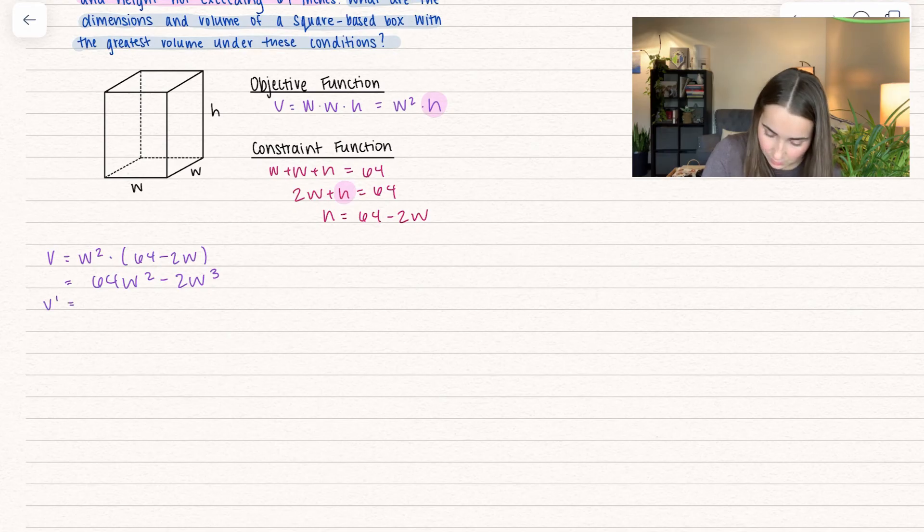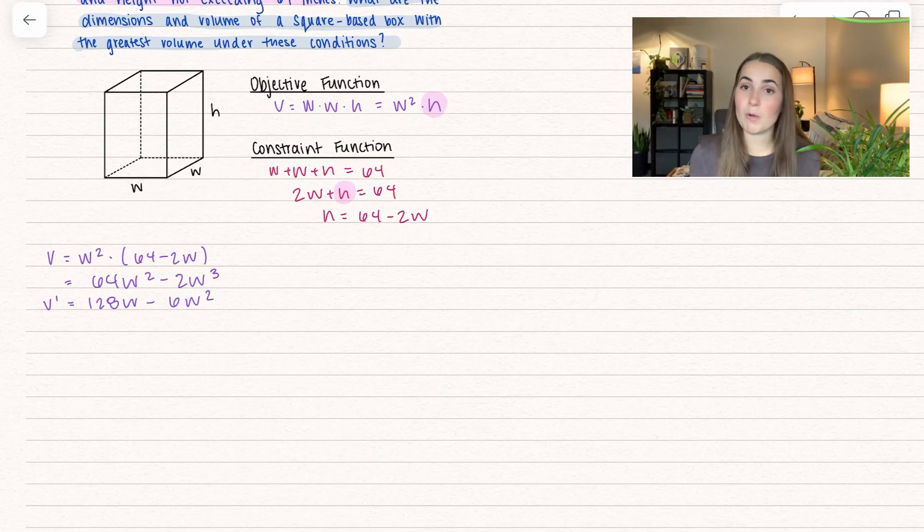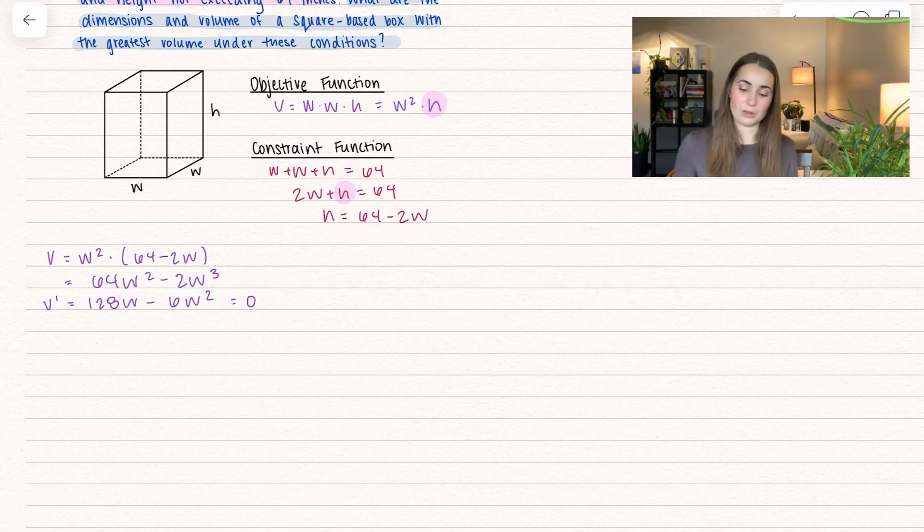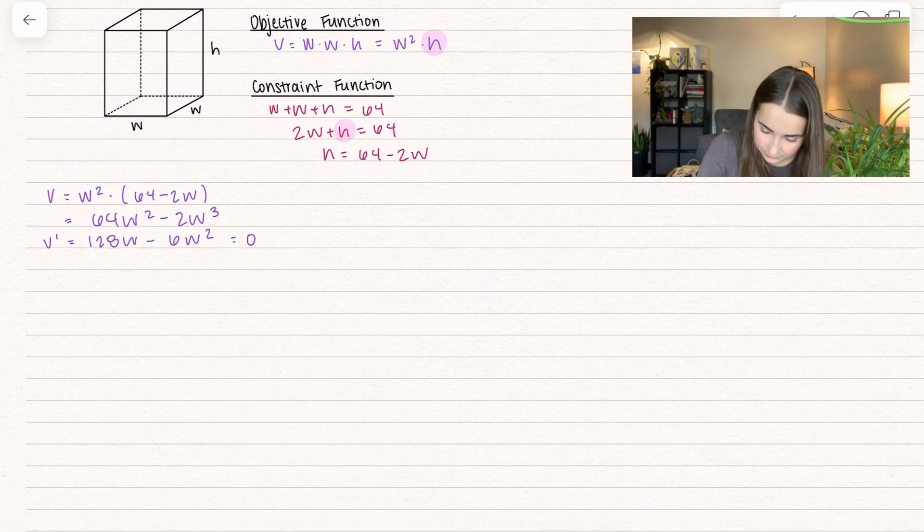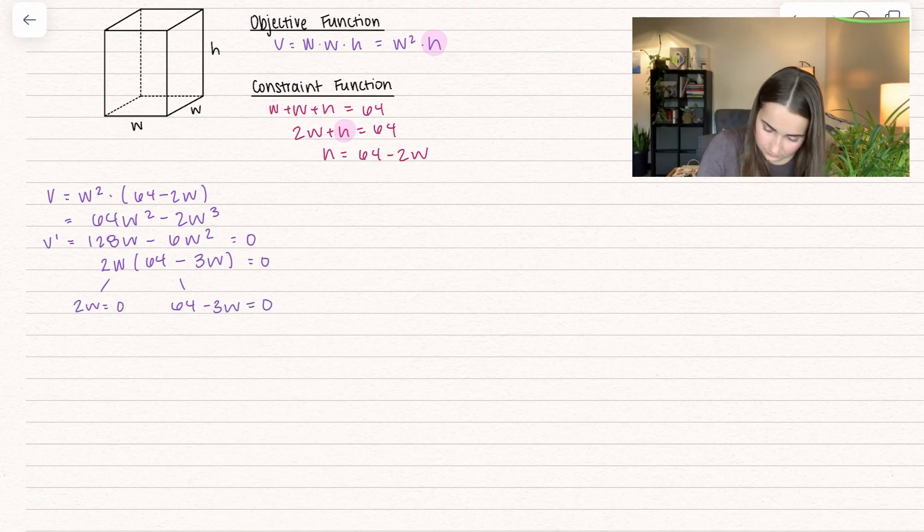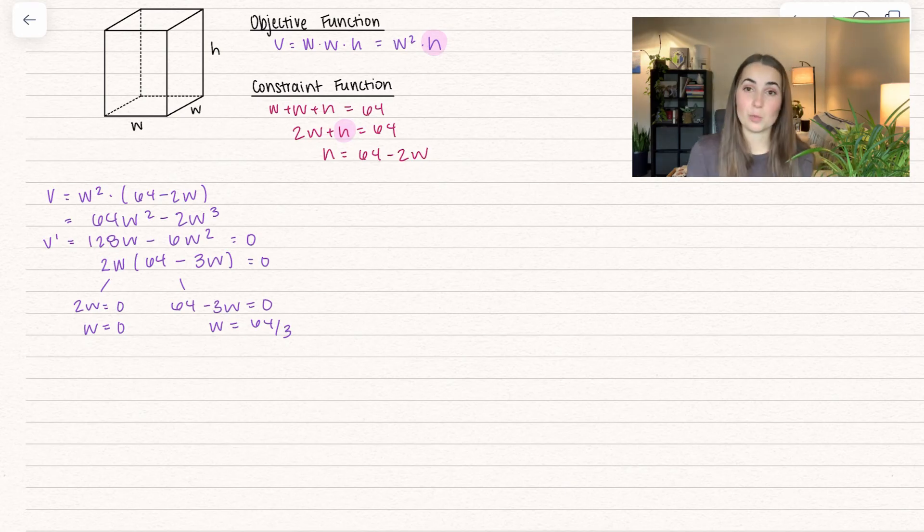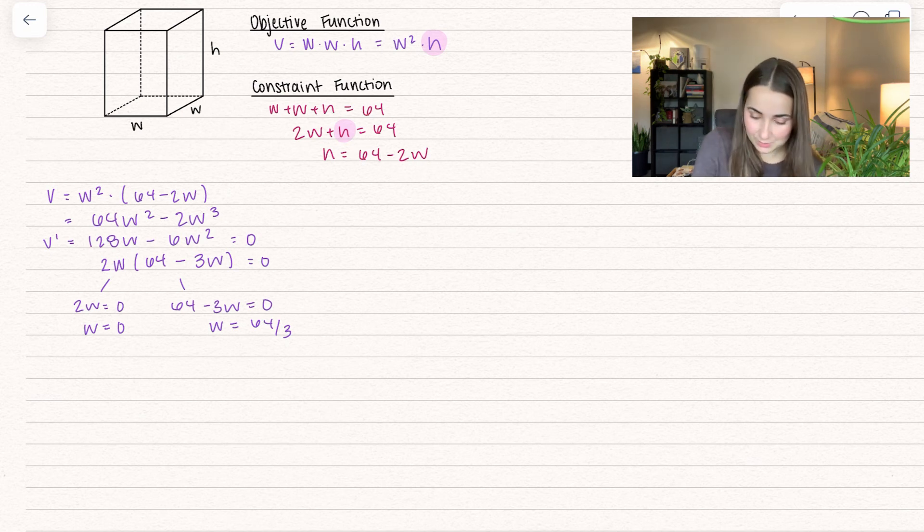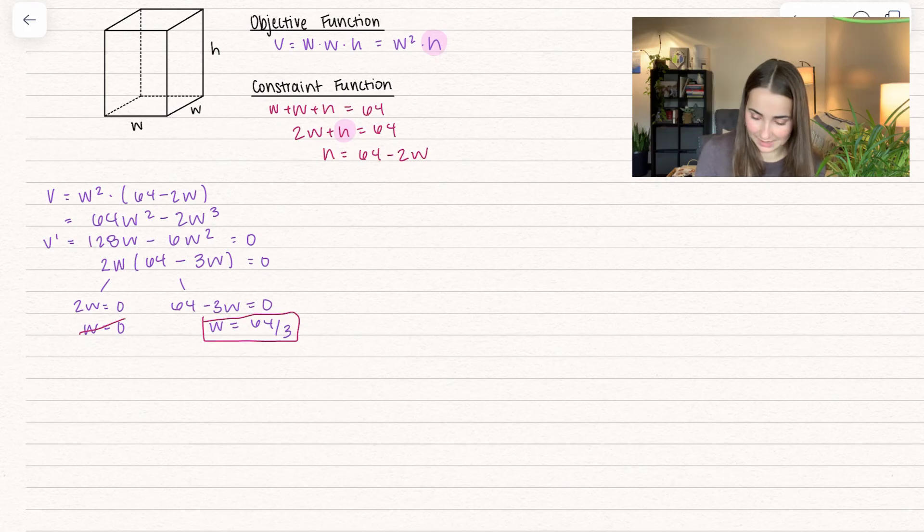Now we can take the derivative. V prime equals 128W minus 6W squared. We want to set this equal to zero and solve for any critical values. We got two different solutions. Let's talk about if they make sense. If the width equals zero, we'd have no volume at all, and so this one makes no sense. We're going to stick with 64 over 3 because that's an actual number.